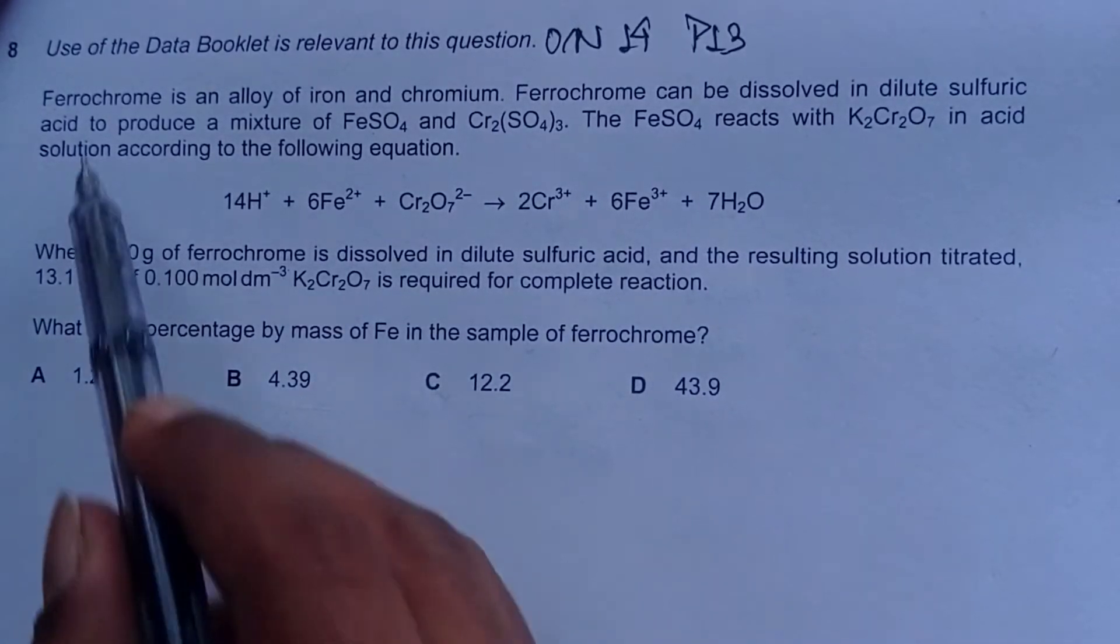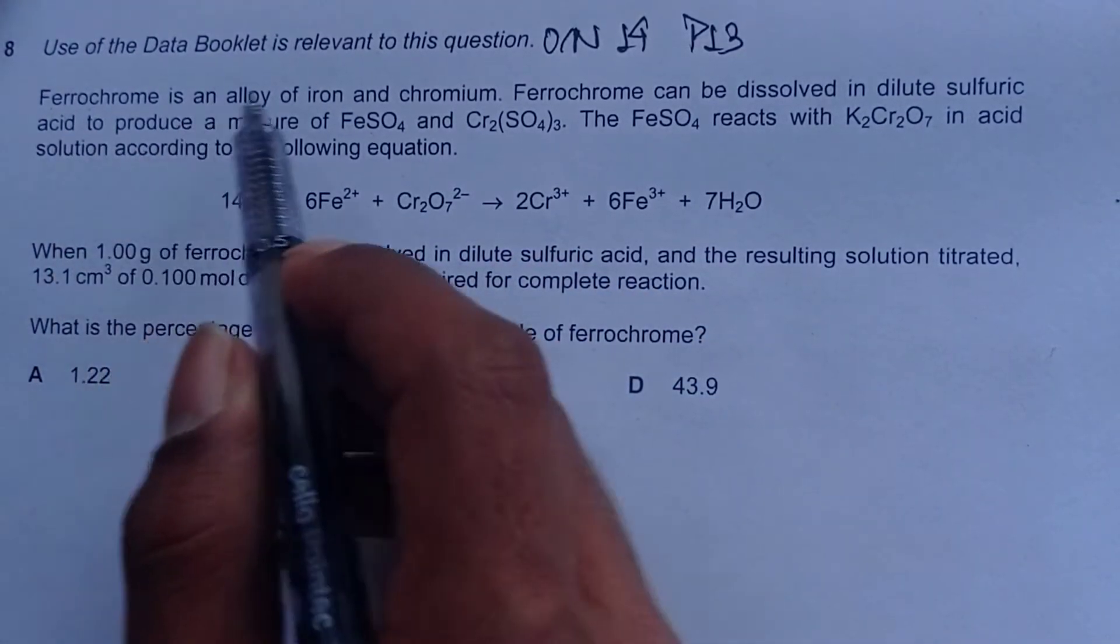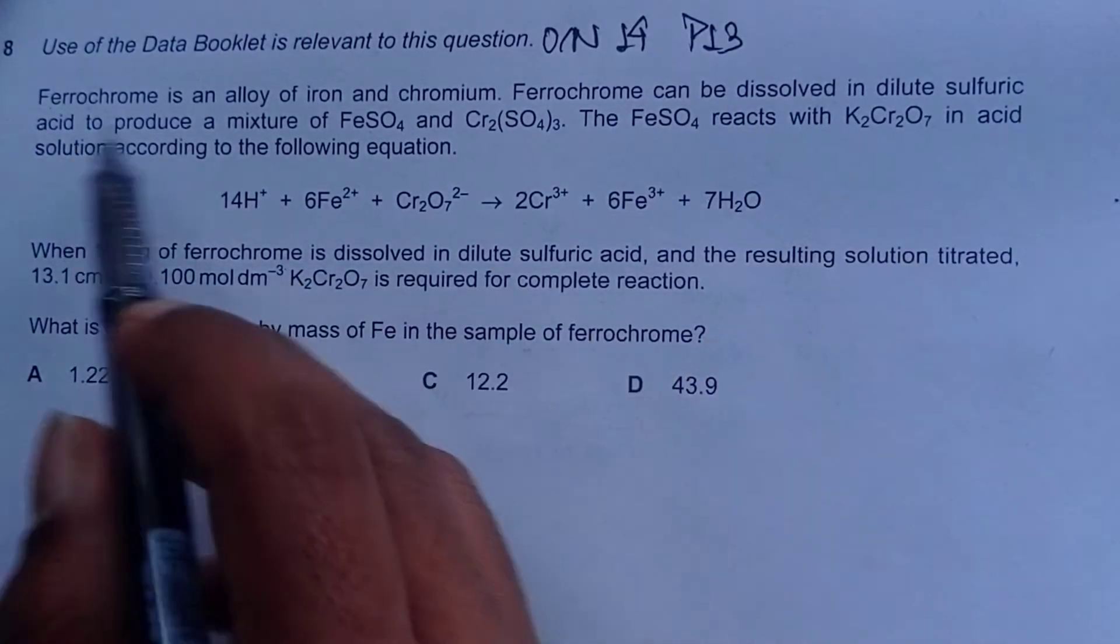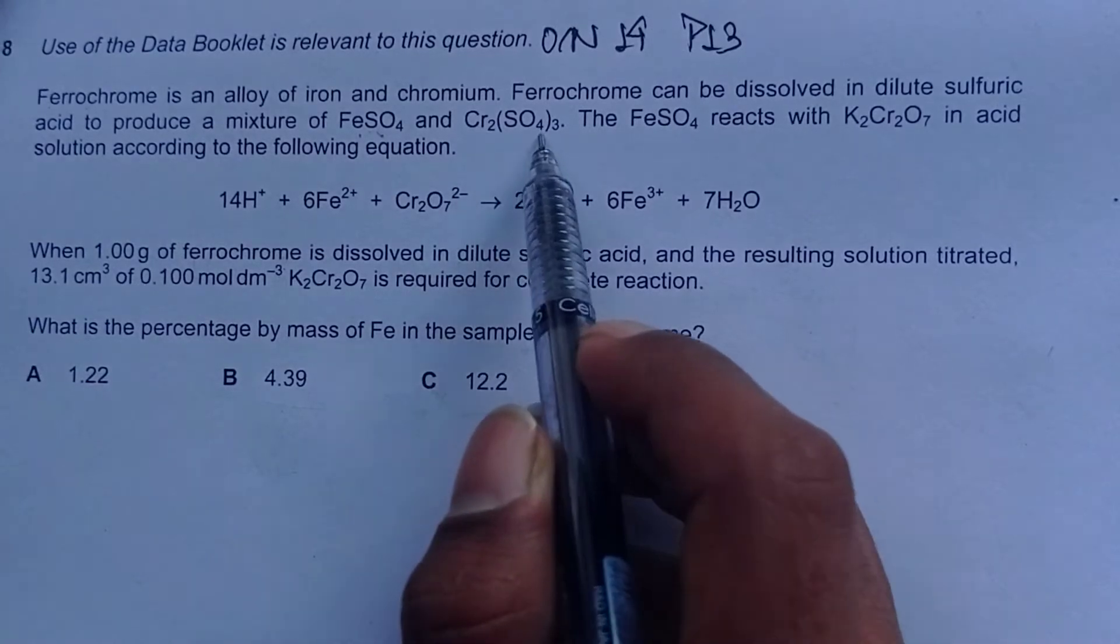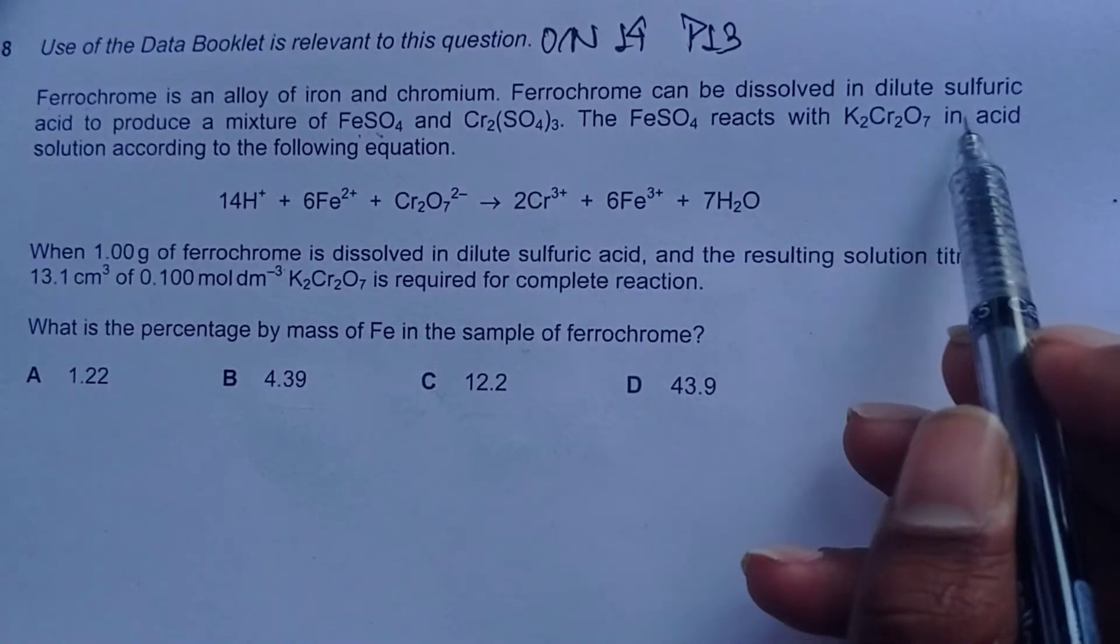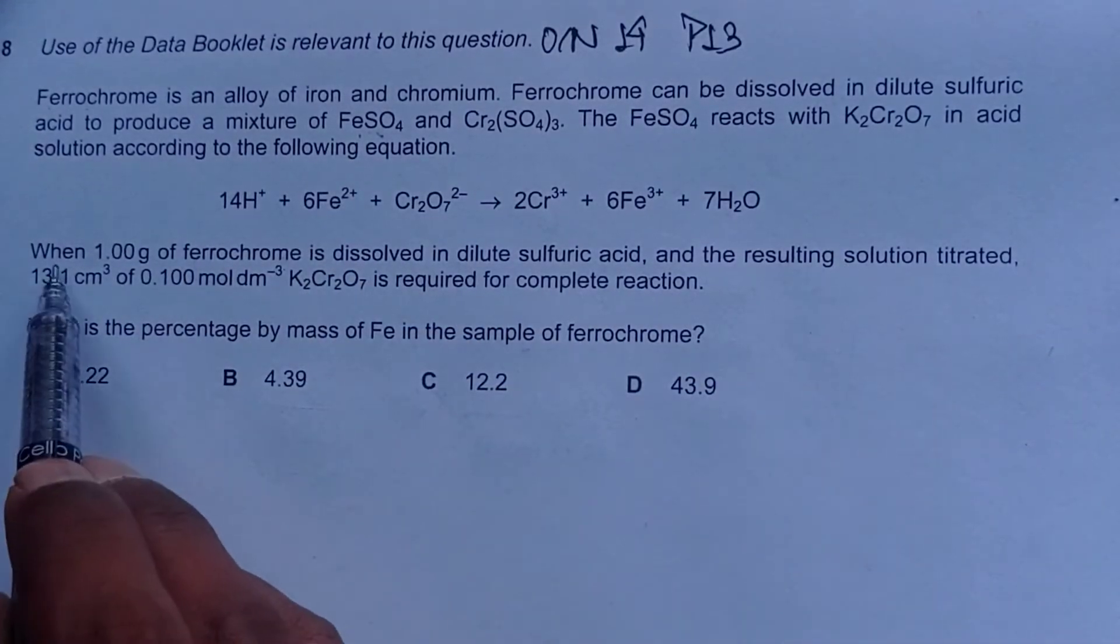The question reads: Ferrochrome is an alloy of iron and chromium. Ferrochrome can be dissolved in dilute sulfuric acid to produce a mixture of FeSO4 and Cr2(SO4)3. The FeSO4 reacts with potassium dichromate, K2Cr2O7, in acid solution according to the following equation.